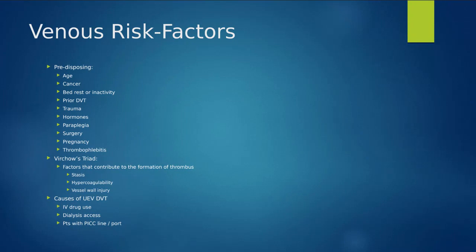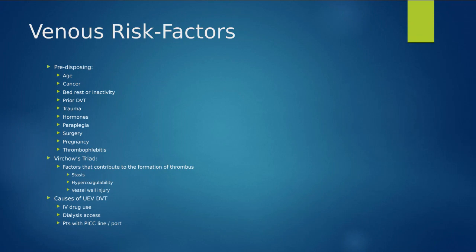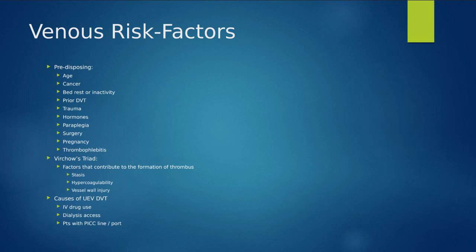Those three things are known as Virchow's triad, and this is mainly associated with lower extremity DVT ultrasound. For upper extremity DVT, causes are less likely. We're really only seeing one of two things: very sick patients — cancer patients, recent dialysis patients, patients with a port for chemotherapy or a PICC line for medication administration — and IV drug users.